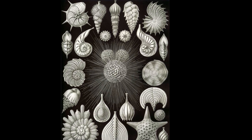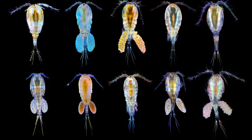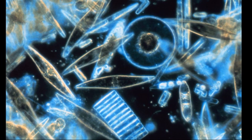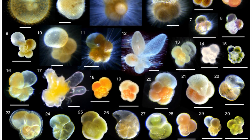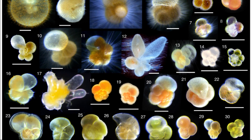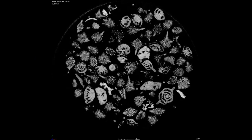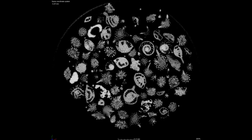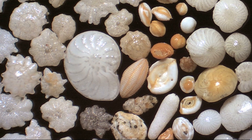Forams eat foods such as dissolved organic molecules, bacteria, copepods, and single-celled phytoplankton like diatoms. Some species that live near the surface have a symbiotic relationship with unicellular algae that they farm inside their shells for food. Others that live in low oxygen environments form symbiotic relationships with chemo-autotrophic bacteria. Some species are parasitic.